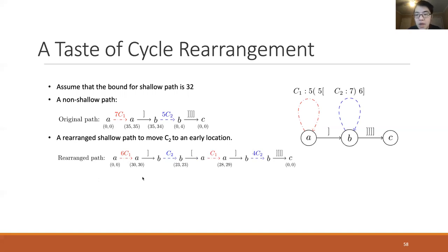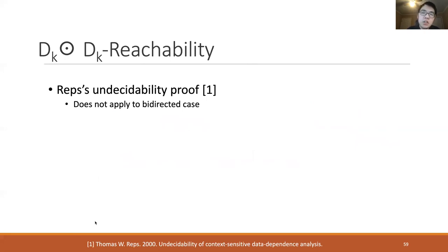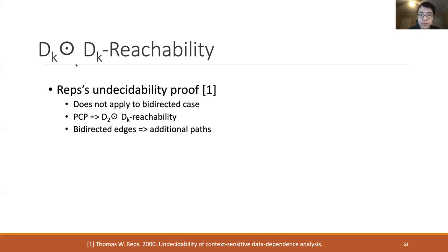In conclusion, we have a polynomial time algorithm for shallow D1D1 paths, and we can show that every D1D1 reachable pair is connected by a shallow D1D1 path, so bi-directed D1D1 reachability is in polynomial time. For bi-directed DkDk reachability, the undecidability proof for the directed DkDk reachability does not apply for the bi-directed case. The undecidability proof for the directed case reduces the post-correspondence problem (PCP) to DkD2 reachability, but this construction fails in the bi-directed case because bi-directed edges allow paths to go back and forth, introducing additional undesired paths that disturb the one-to-one relationship between PCP solutions and reachability.